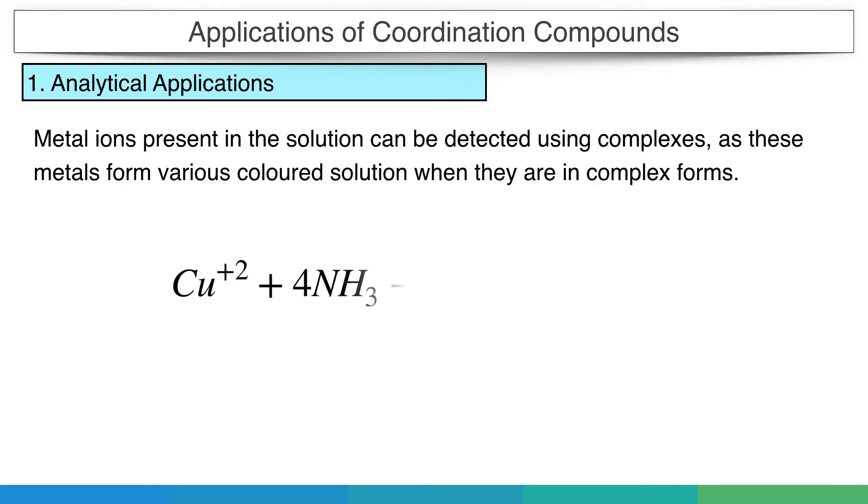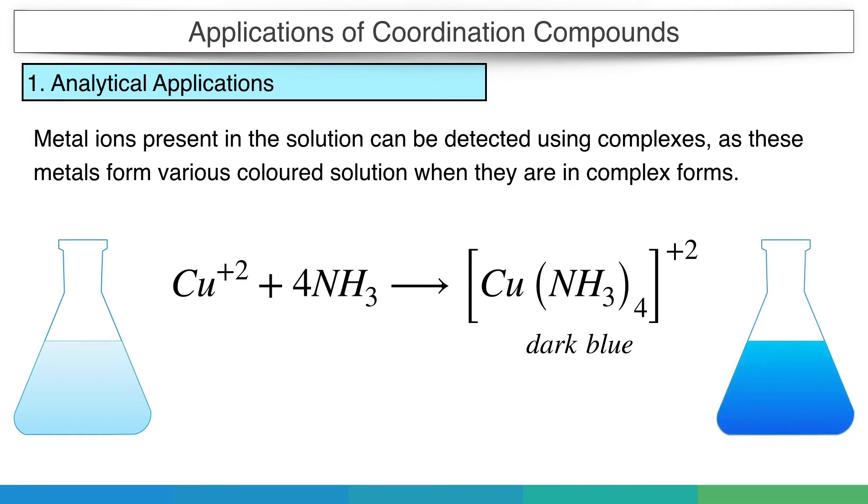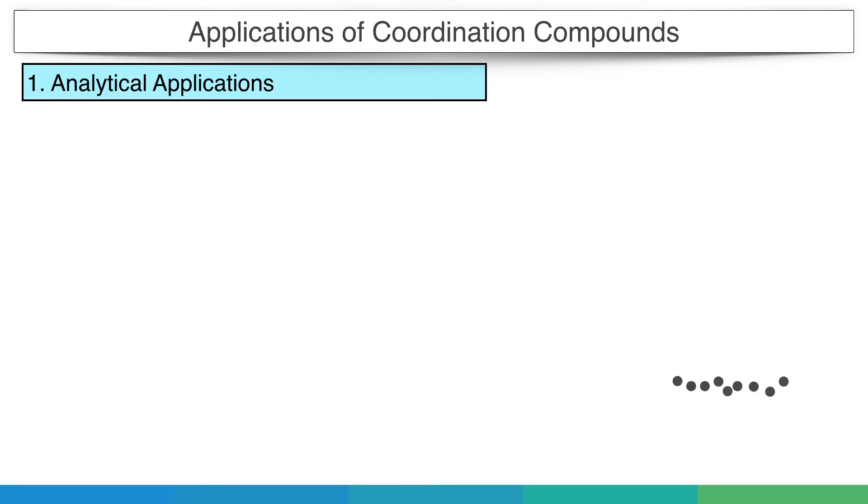For example, copper 2+ ions can be detected in solution by the dark blue colored solution it forms on addition of ammonia. From a mixture of metal ions, some cations can be separated on the basis of stability of their complexes.